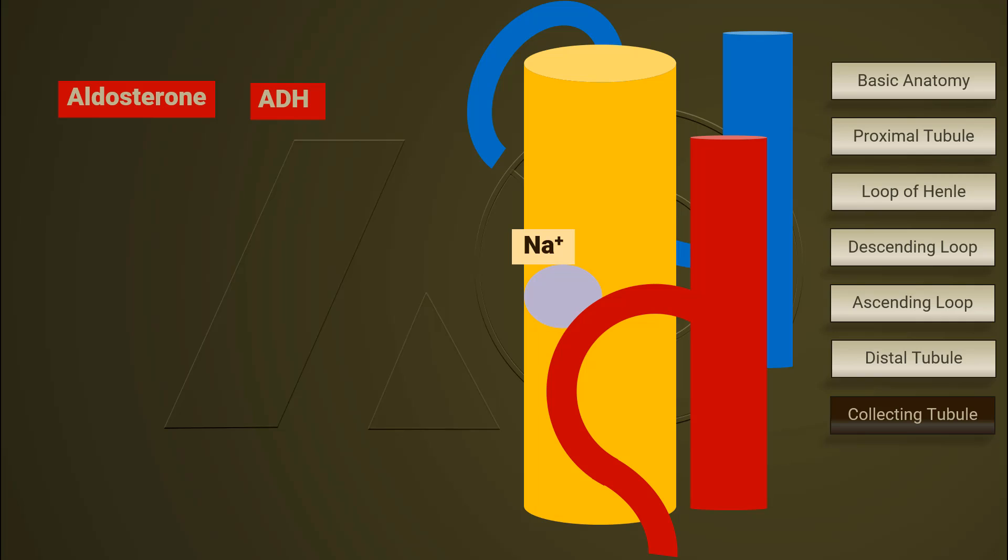Sodium first enters the principal cells through epithelial sodium channels. Then, it is reabsorbed into the bloodstream through sodium potassium adenosine triphosphatase pump, sodium potassium ATP pump in short.